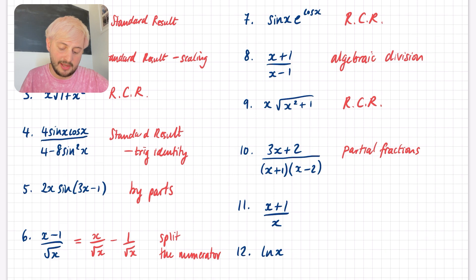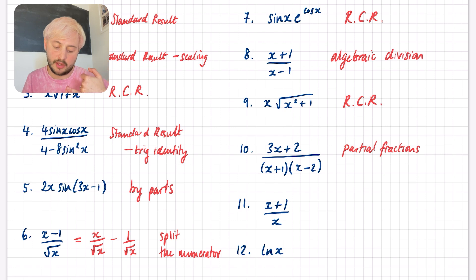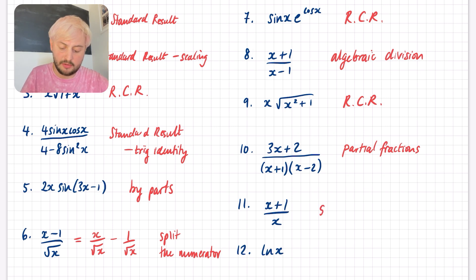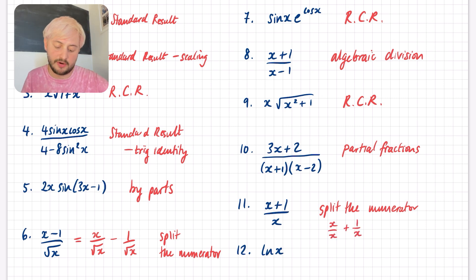Question 11 is a fractional term, so it looks like it's going to be one of: split the numerator, partial fractions, or algebraic division. I think this one is very similar to question 6, so the technique is to split the numerator. When I say split the numerator, that's just going to be x/x + 1/x, because you can do that with fractions.